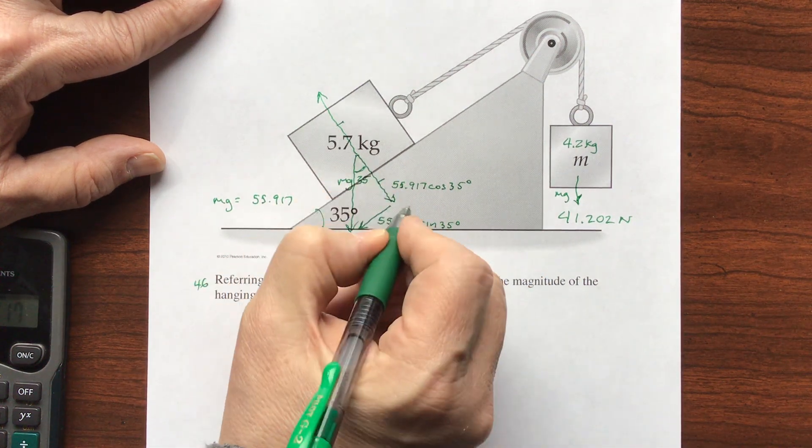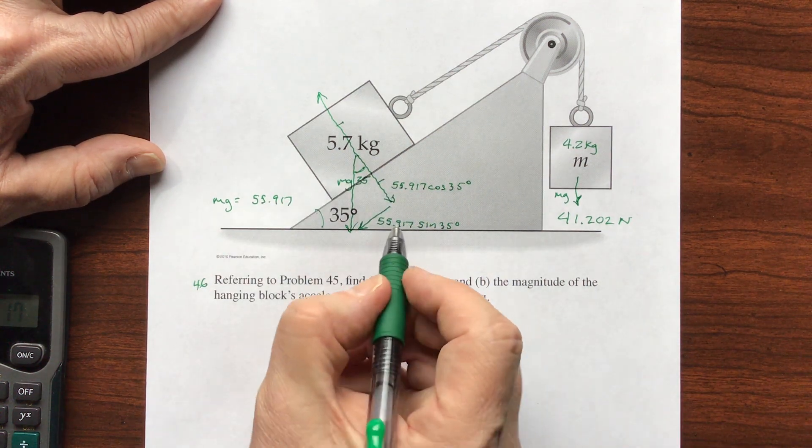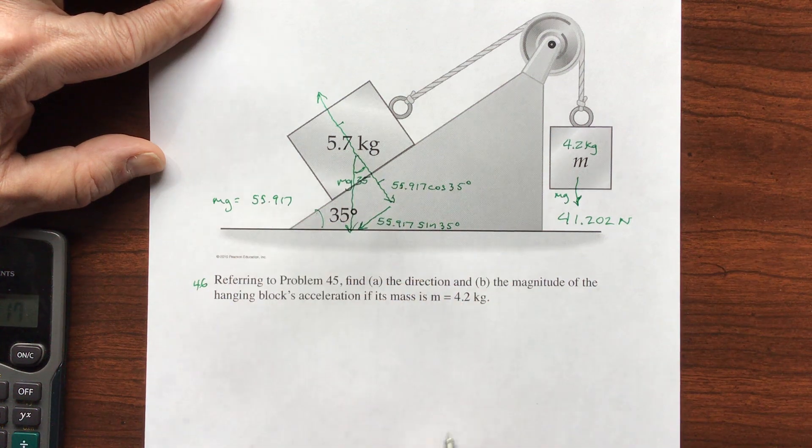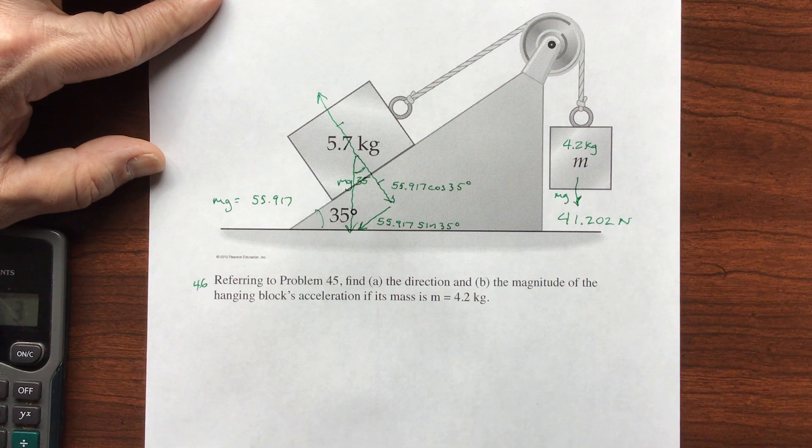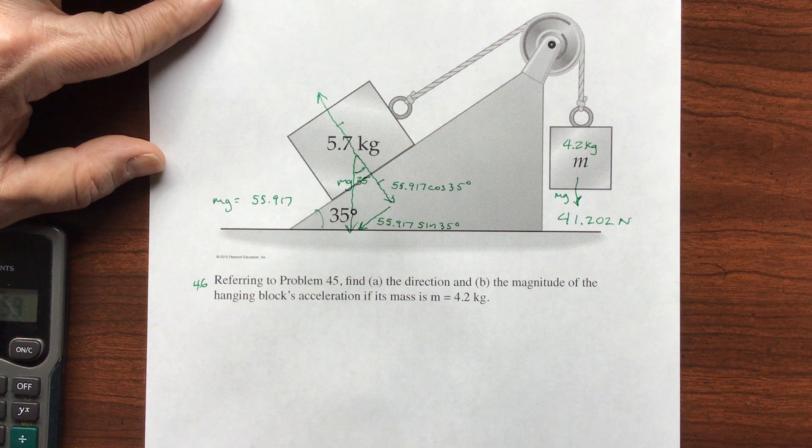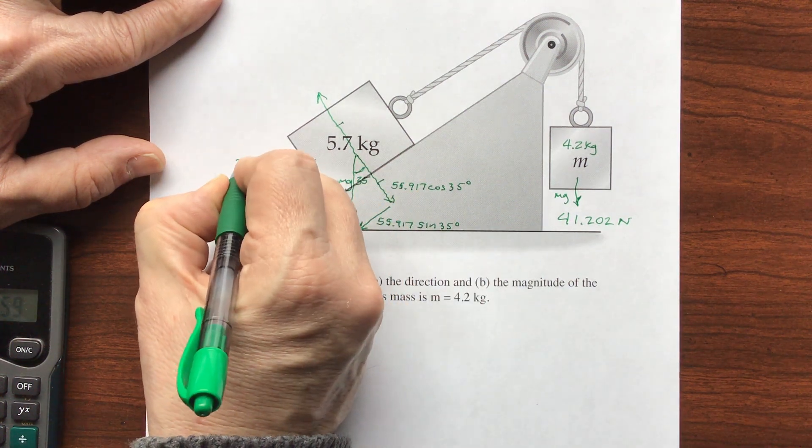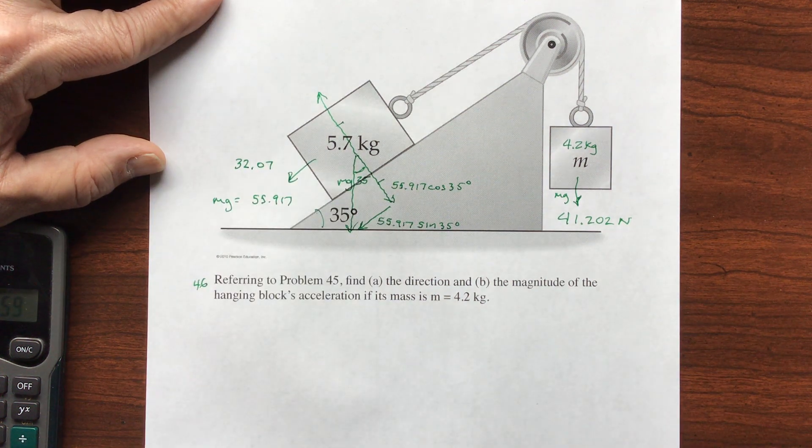But I don't really need this because these two cancel each other. One is heading down into the block. The other is heading up from the block, and they cancel each other out. So the only component of mg that's left is this that's making it want to go down. So 35 sine times 55.917 gives me a downward force of 32.07.